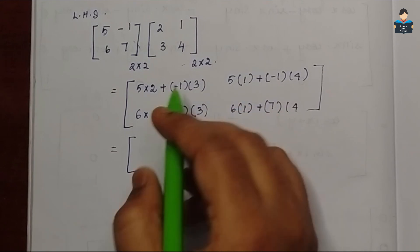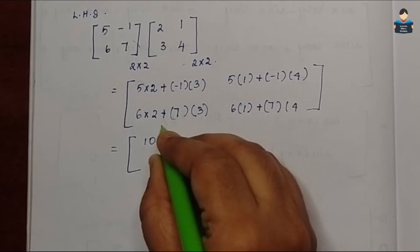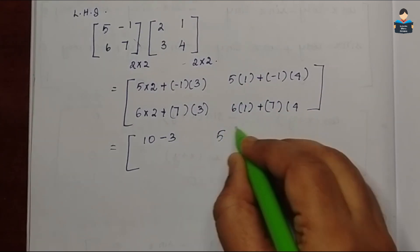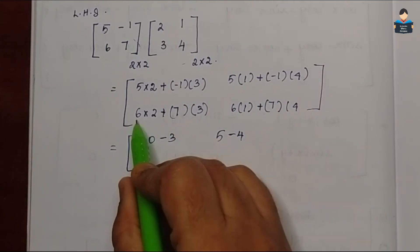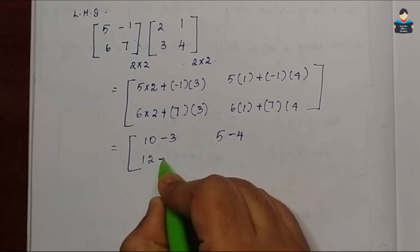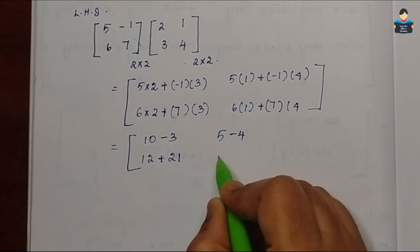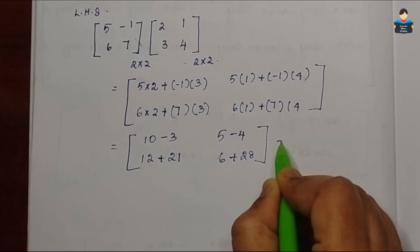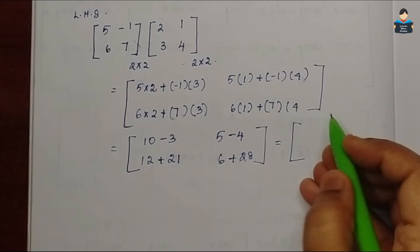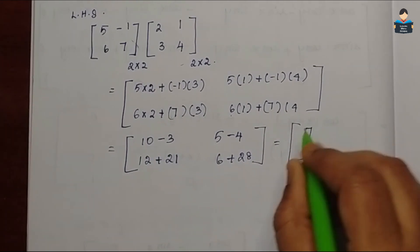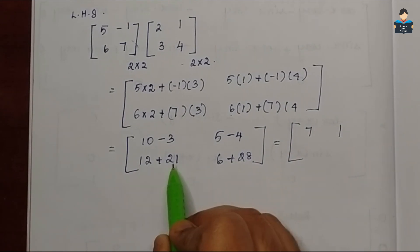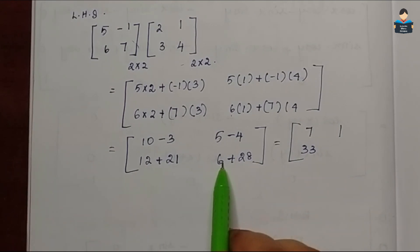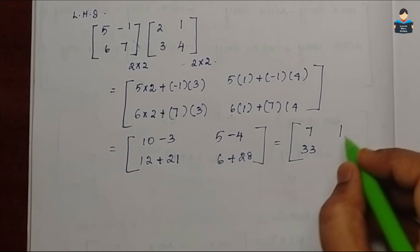Calculating: 5×2 = 10, minus 1×3 = −3, so 10−3 = 7. Then 5×1 = 5, minus 1×4 = −4, so 5−4 = 1. Then 6×2 = 12, plus 7×3 = 21, so 12+21 = 33. And 6×1 = 6, plus 7×4 = 28, so 6+28 = 34. Wait — 6+2 = 38. So LHS = [7, 1; 33, 38].